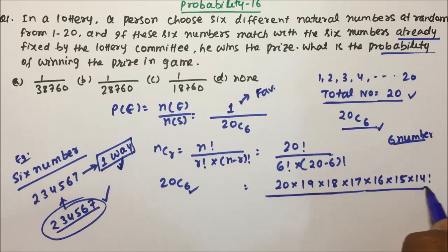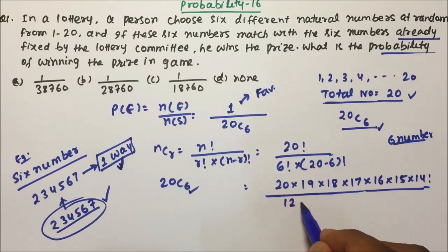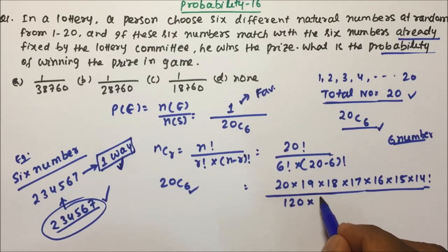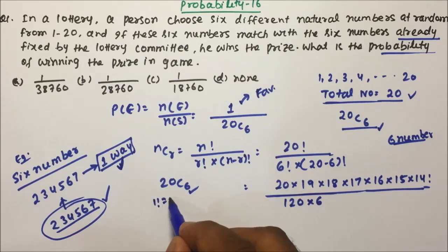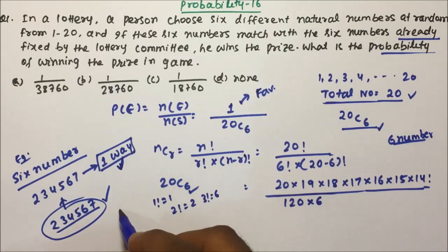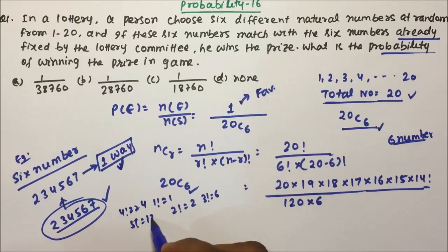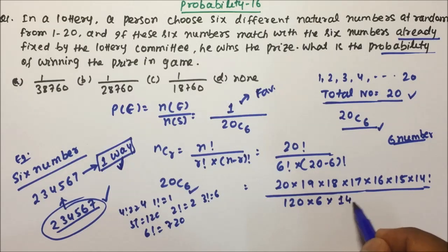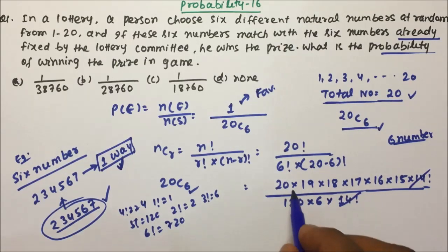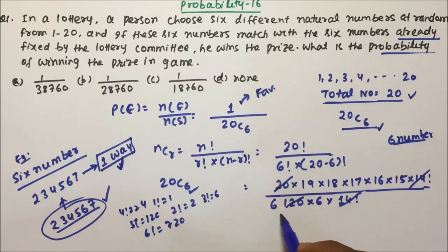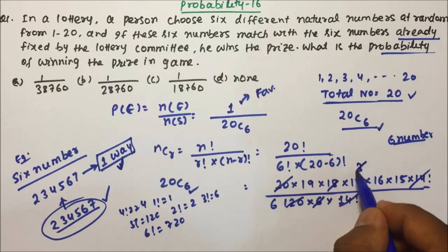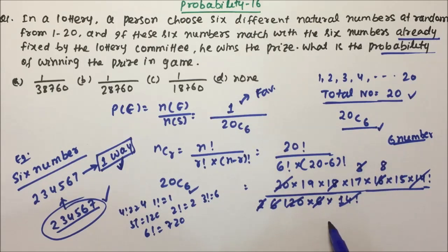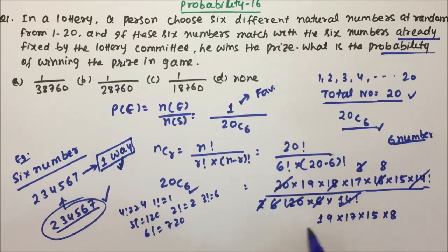The calculation will be quite lengthy. 6! = 720, which is 120 × 6. For reference: 1! = 1, 2! = 2, 3! = 6, 4! = 24, 5! = 120, 6! = 720. And 20 − 6 = 14, so 14! cancels. Now simplifying: 20 divides into 6! six times, then further dividing — 6 and 3 give 2, 3 and 2 give 6, 2 and 8 — we are left with 19 × 17 × 15 × 8.